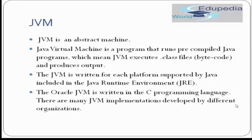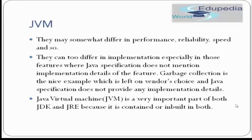JVM is written for each platform supported by Java and is included in JRE. For example, Oracle JVM is written in the C programming language, and there are many Java implementations developed by different organizations. So it's not necessary that the JVM implementation has to be in Java — you can see that Oracle JVM is written in C. Different JVM implementations may somewhat differ in performance, reliability, and speed.